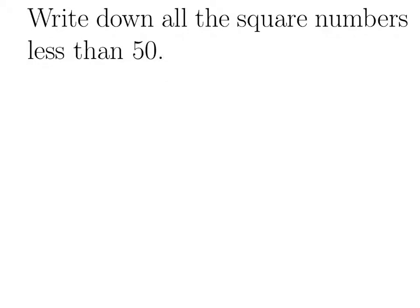Let's write down all the square numbers less than 50. First of all, let me remind you what a square number is. If you take any number, say 2 for example, and you multiply it by itself, then you'll get a square number. So 4 is a square number. Another example would be 3 times 3, giving you 9.